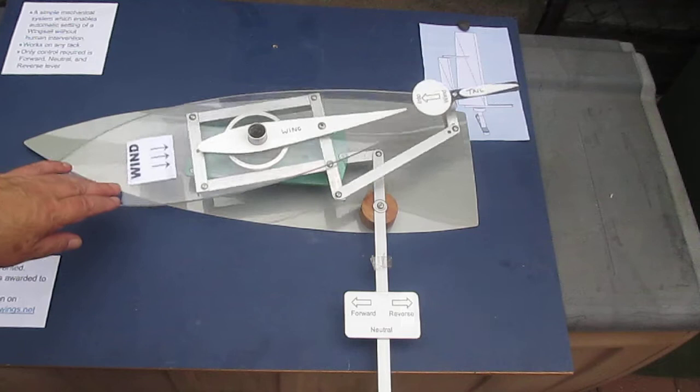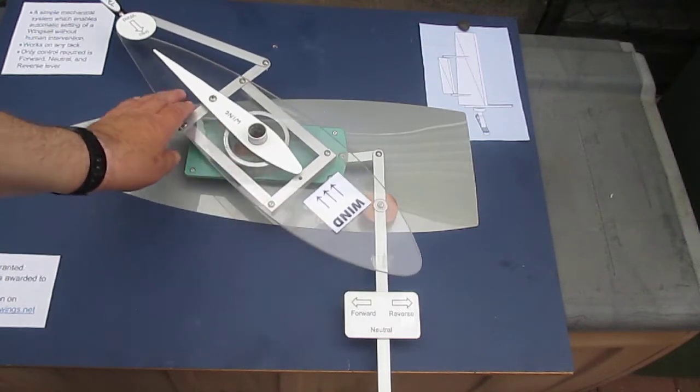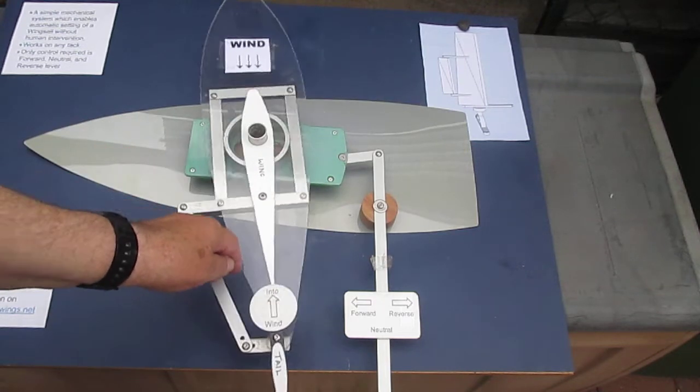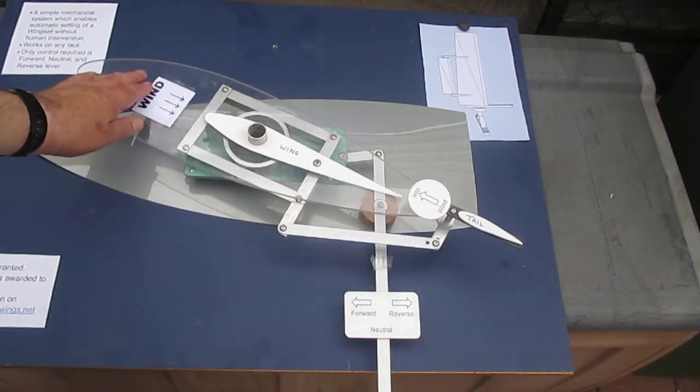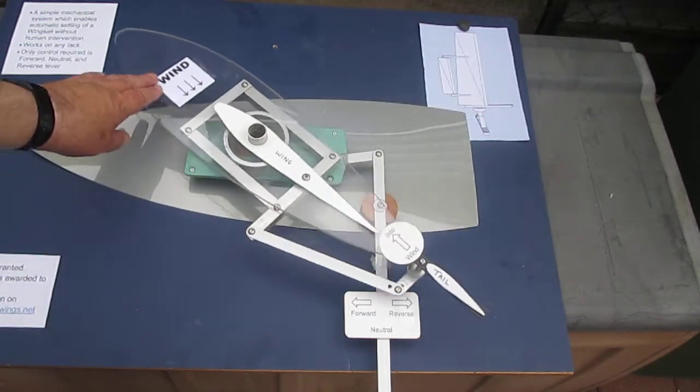This is the wing in neutral position. Any direction that the wind blows in onto the boat, it will have no effect and will just be in a parking position or mooring position.